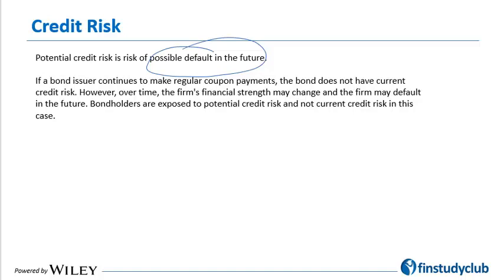For instance, in a forward contract there is no payment made during the intermediate period, so there would be no current credit risk during the life of the contract. There would be one party gaining and the other losing, and the gaining party is exposed to credit risk because the losing party might fail to honor its obligation. So there we have potential credit risk, but no current credit risk.